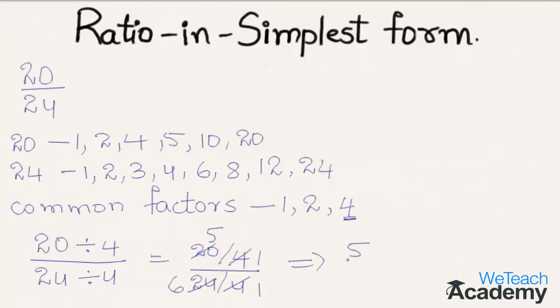We get 5 by 6 as the simplest form of 20 by 24. So 20 by 24 is equivalent to 5 by 6. These both ratios are also called equivalent ratios.